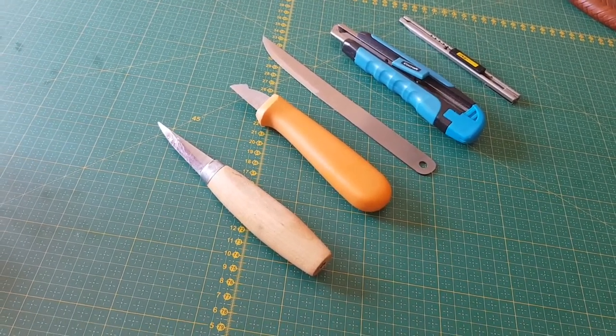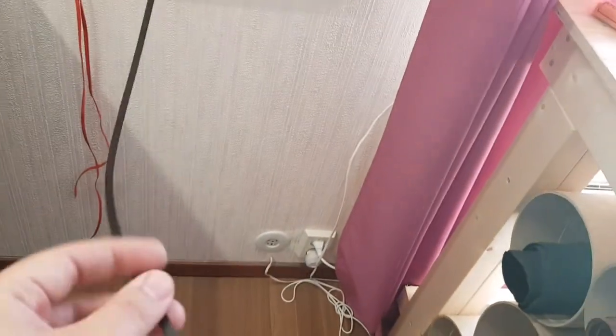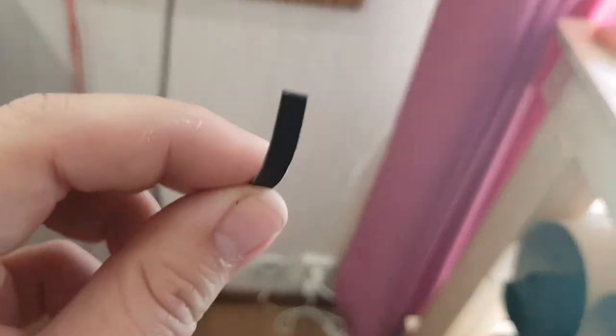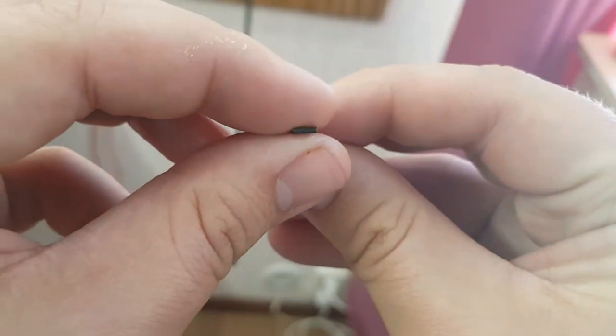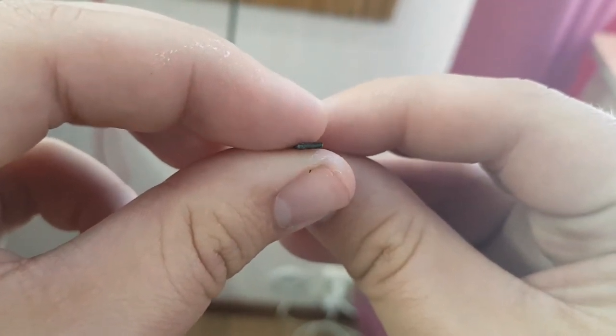So first off, what is beveling or paring? Well, this is a strand that we're gonna work on today, and if we have a look at the strand from this perspective, the strand has a rectangular shape.